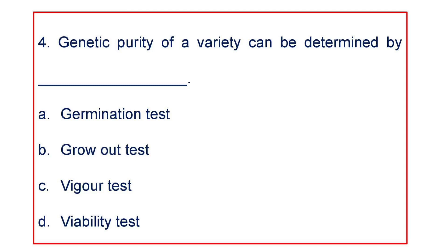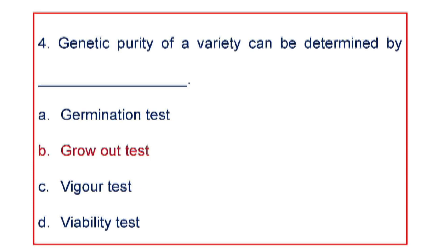Next question: Genetic purity of a variety can be determined by A. Germination test, B. Growout test, C. Vigor test, or D. Viability test. The answer is Growout test.